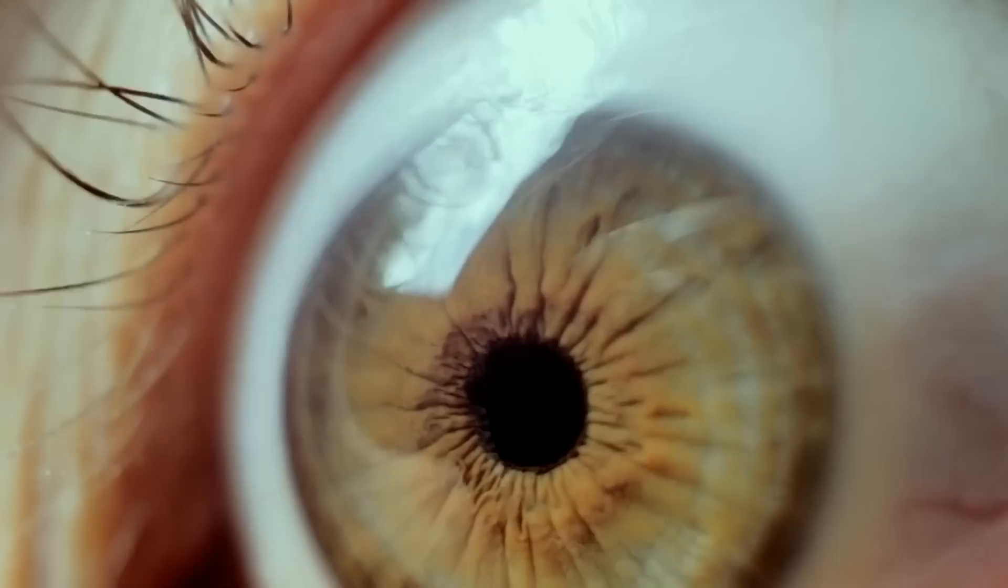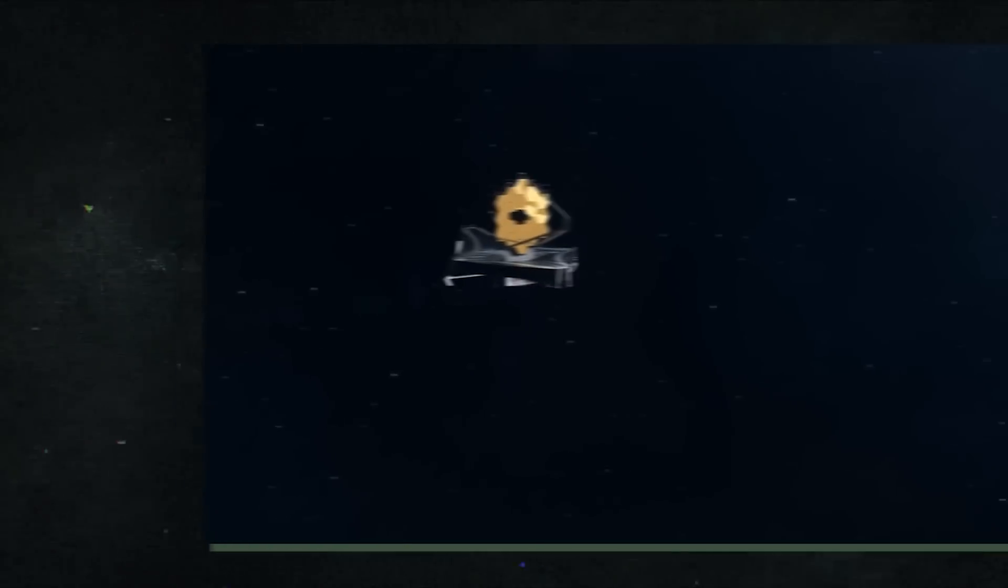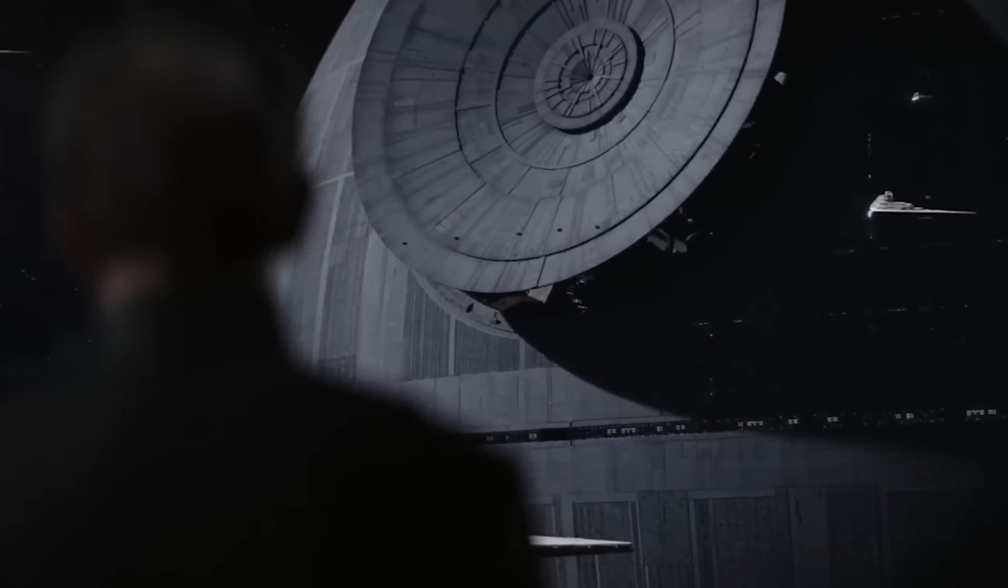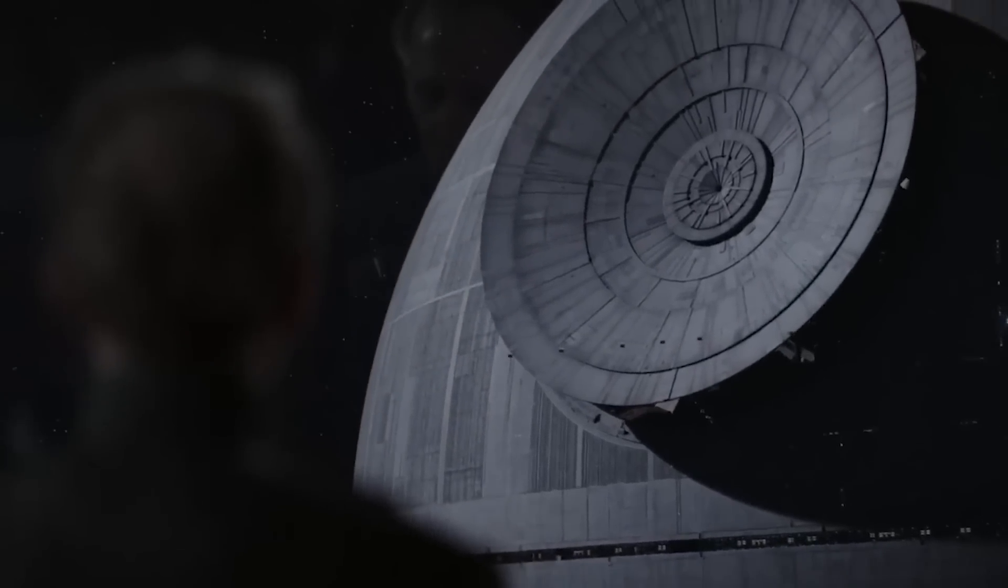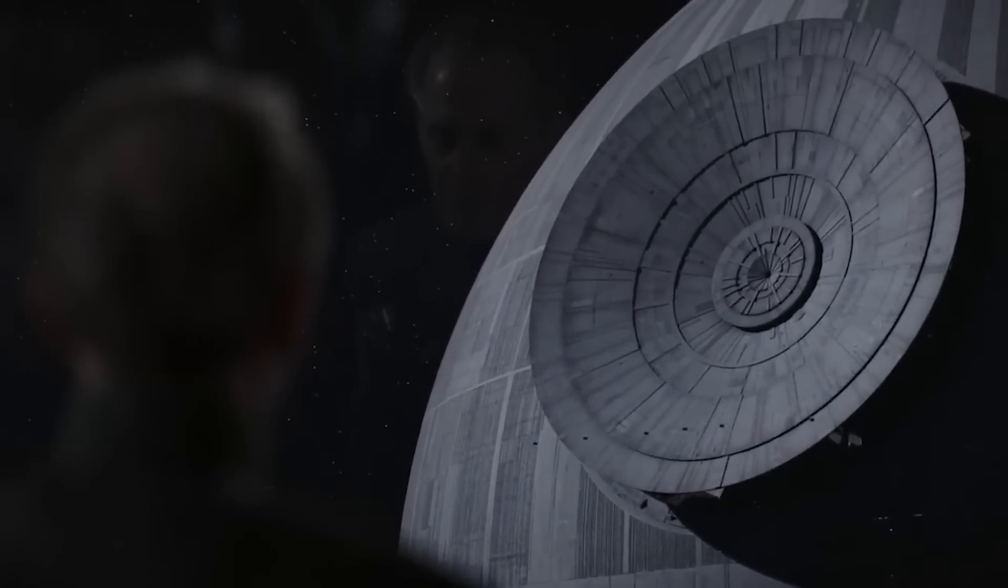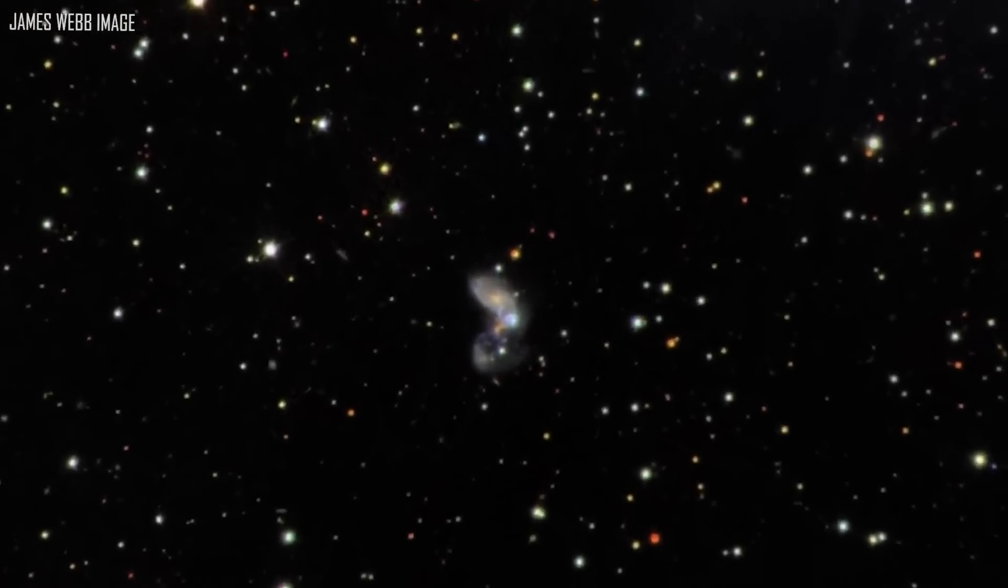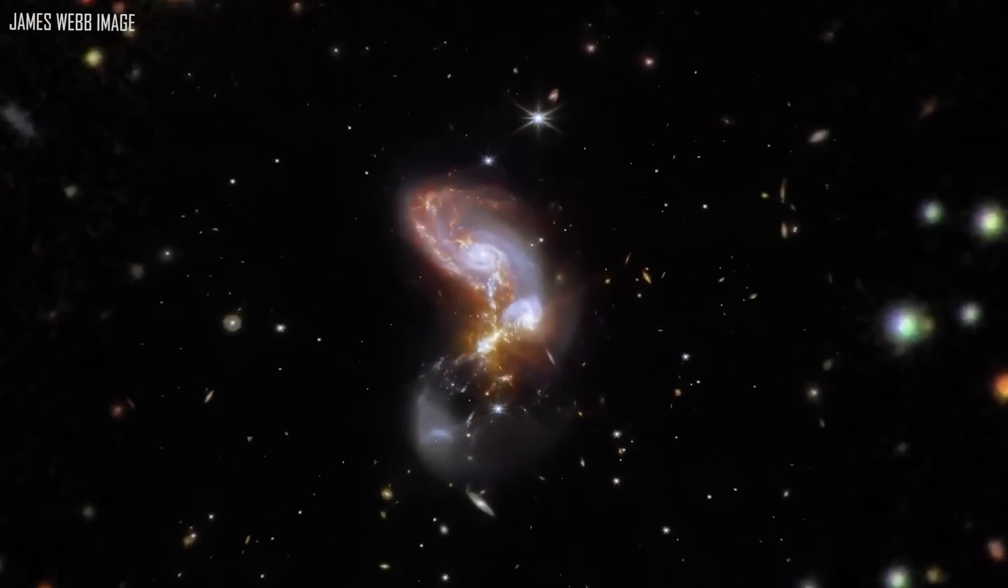No one expects gas giant HIP 65426b to be a likely candidate for hosting life as we know it. We ought to have some serious debates as a species if James Webb ever points at a planet and discovers evidence of extraterrestrial megastructures resembling the Death Star or an armada of highly-developed spacecraft. Is there truly anyone or anything alive somewhere in the universe? How can we locate them?